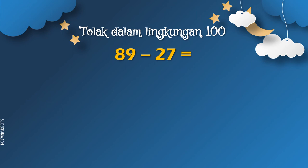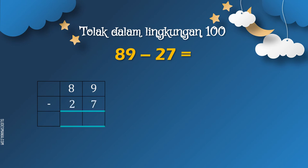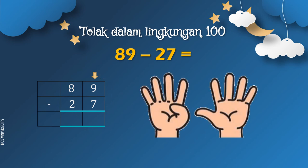Seterusnya, kita tengok pula 89 tolak 27 sama dengan... Kita tulis dalam bentuk lazim: 89 tolak 27. Kariskan 2 baris. Sekarang kita selesaikan dulu di rumah sa, iaitu 9 tolak 7. Keluarkan 9 jari dan kita tolakkan dengan 7 — tutupkan 7 jari: 1, 2, 3, 4, 5, 6, 7. Sekarang kita kira berapa jari yang tinggal: 1, 2. Jadi, 9 tolak 7 sama dengan 2. Tuliskan jawapannya 2.